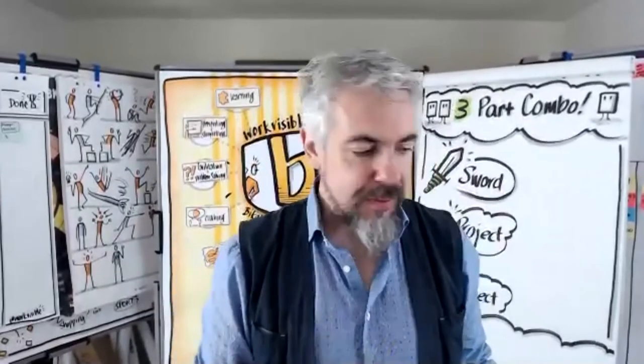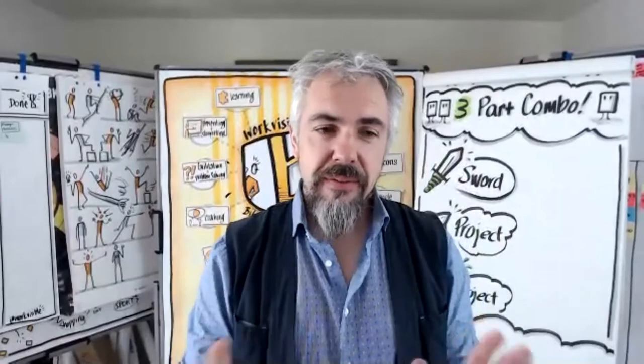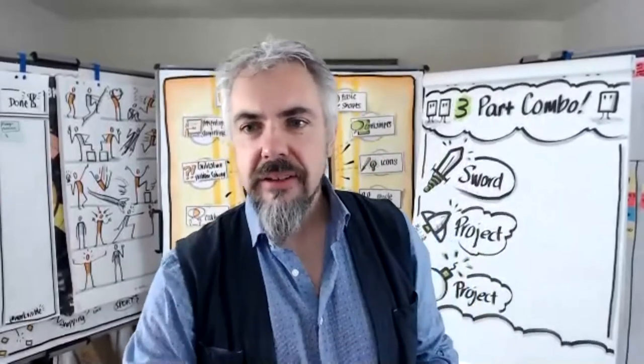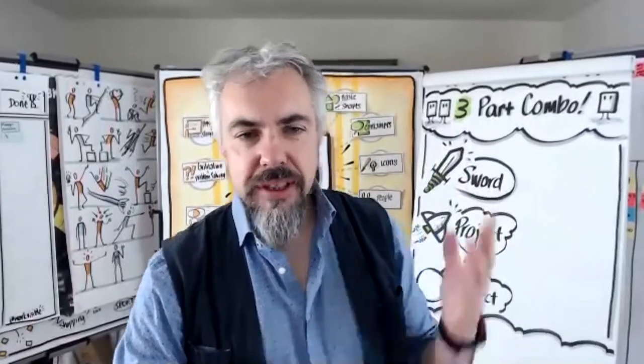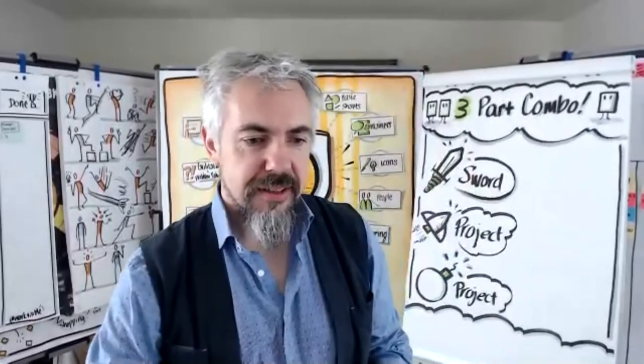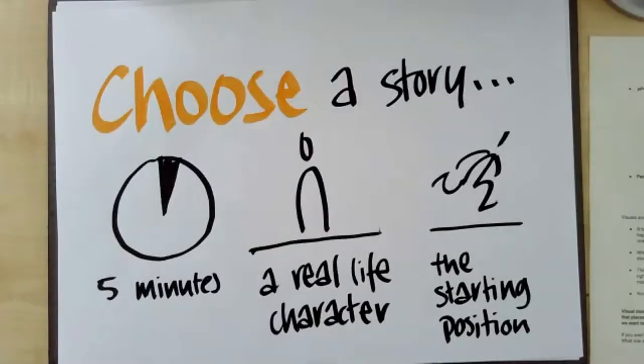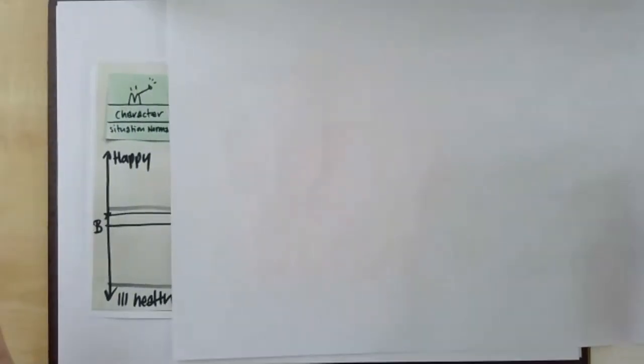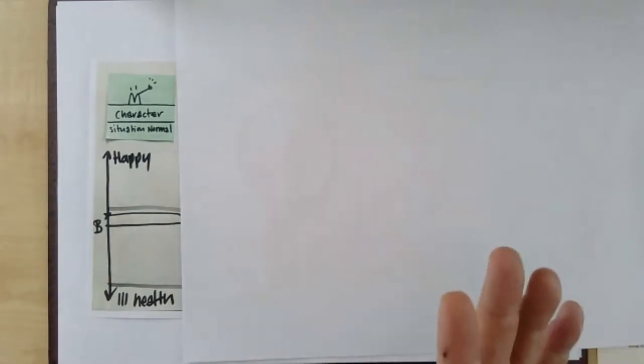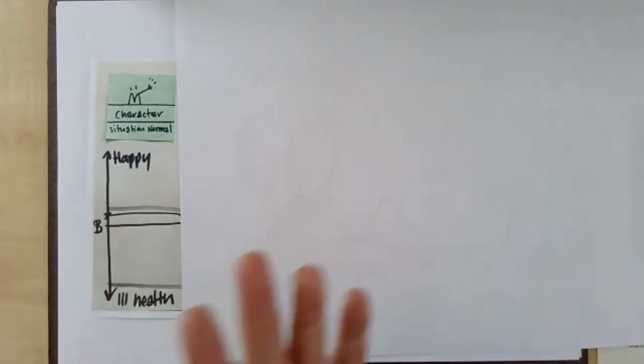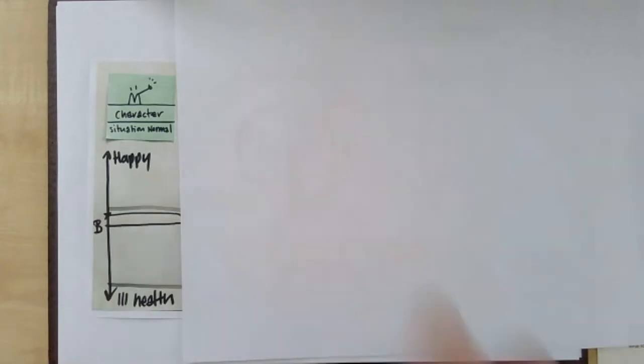First, I'm going to give you the overview of every story ever told. Let me flip my camera. So every story ever told, let me flip this over, basically starts with character, situation normal. It always starts with a character. What I would say is, even if you're talking about network infrastructure, turn it into a character. Draw a box, give it a name, some arms and legs. It will be more interesting.